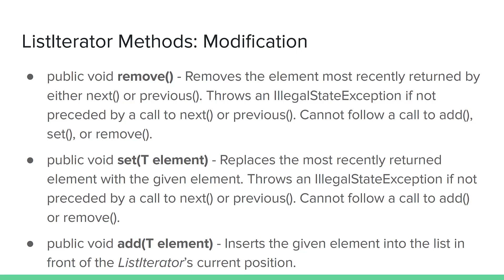The three ListIterator modification methods are remove, set, and add. Like the remove method from a basic iterator, remove is described as removing the element most recently returned by the iterator. Since the ListIterator also has a previous move, remove now removes the element most recently returned by either next or previous. Like a basic iterator, two consecutive calls to remove would result in an IllegalStateException. Also, a remove method cannot follow a call to add, set, or remove — each remove must be preceded by a call to next or previous.